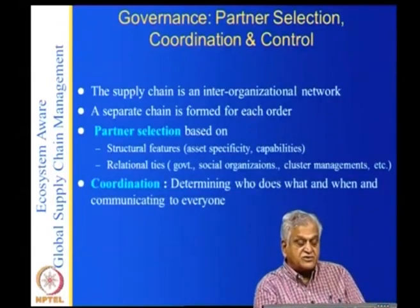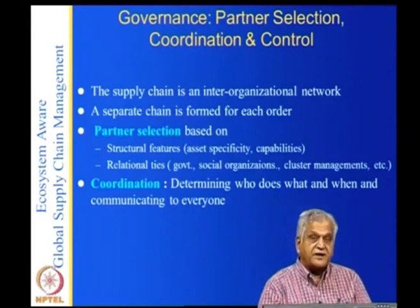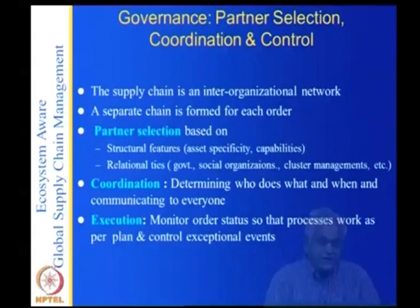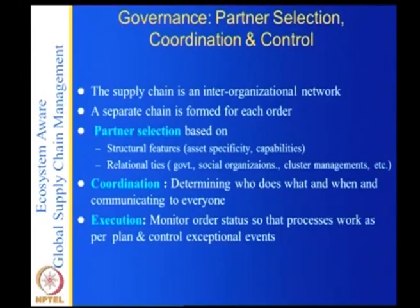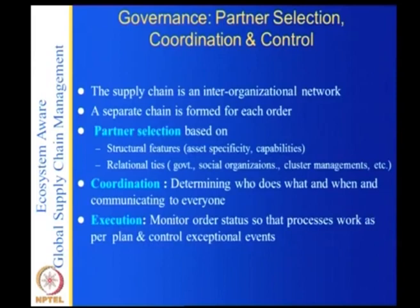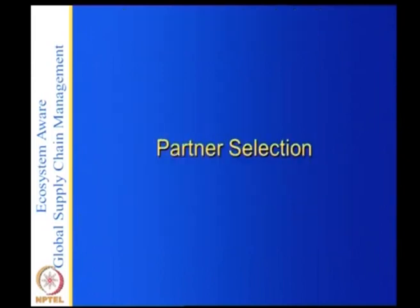Partner selection has two features: structural and relational. Coordination is determining who does what and when and communicating to everyone — that is mathematical. Execution is monitoring the order status so that processes work as per plan and controlling exceptional events. These are the three components of governance: partner selection, coordination, and execution.